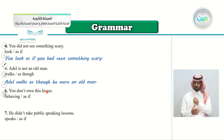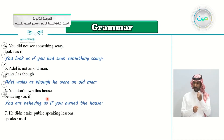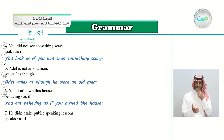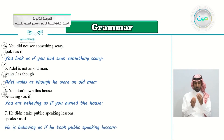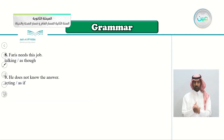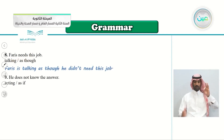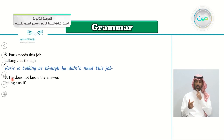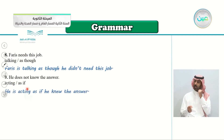Number six: 'You don't own this house' — behaving as if — Answer: 'You are behaving as if you owned the house, but you don't.' Number seven: 'He didn't take public speaking lessons' — speaks as if — Answer: 'He is speaking as if he took public speaking lessons.' Number eight: 'Faris needs this job' — talking as though — Answer: 'Faris is talking as though he didn't need the job, but he does.' Number nine: 'He doesn't know the answer' — acting as if — Answer: 'He is acting as if he knew the answer, but in reality he doesn't.'